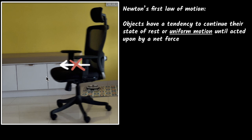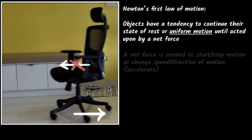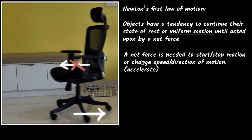Why did it stop? It stopped because there was a frictional force acting backwards. That's why it stopped. If there was no frictional force, the chair would keep moving forever. So it's the friction that stopped the chair. What this means is that you need a net force to start the motion — like when we kicked it — or to stop the motion, like friction is doing.